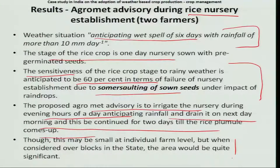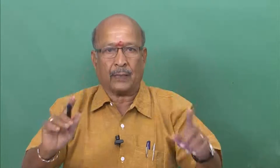Do not repeat this on all 6 days, because the plumule of the rice will come up and provide its own protection, and the radicle will also go into the soil, giving strength to the rice nursery. You might say this only affects a single farmer, but consider the village level, block level, district level, and state level — the area is large. When this agro-advisory is practiced, it may cover 10,000 hectares, and the 60% nursery loss will be eliminated.